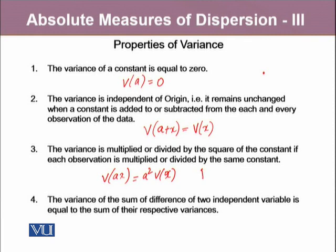And if it is divided by b, each observation in our data is divided by b, the variance will be one over b squared, variance of x again.